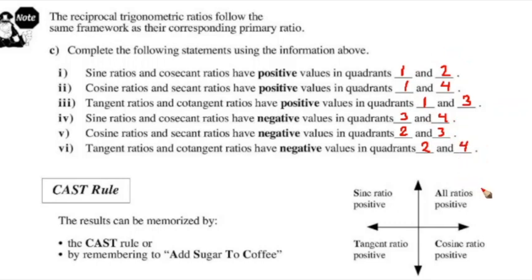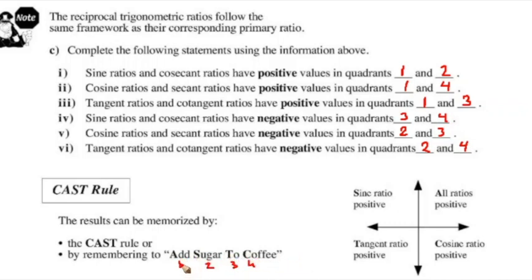These results can be remembered using the CAST rule. Starting in quadrant four and going counterclockwise: C — cosine is positive, A — all ratios are positive, S — sine is positive, T — tangent is positive. Alternatively, starting in quadrant one, use 'add sugar to coffee': All, Sine, Tangent, Cosine — indicating which ratio is positive in each quadrant going counterclockwise.